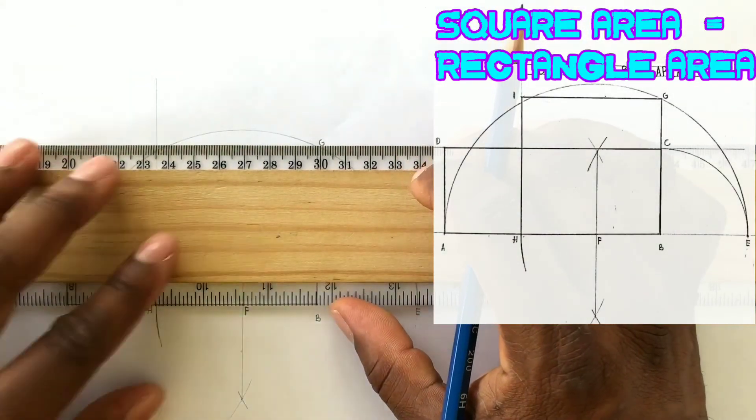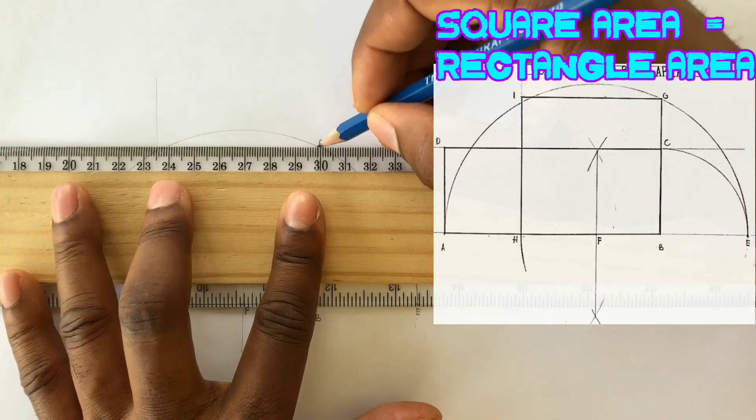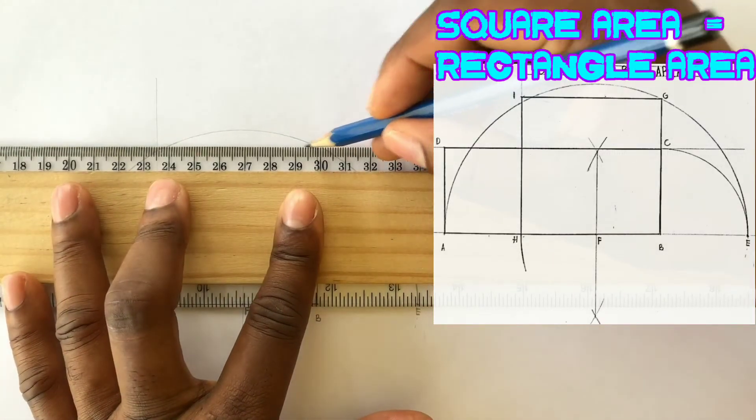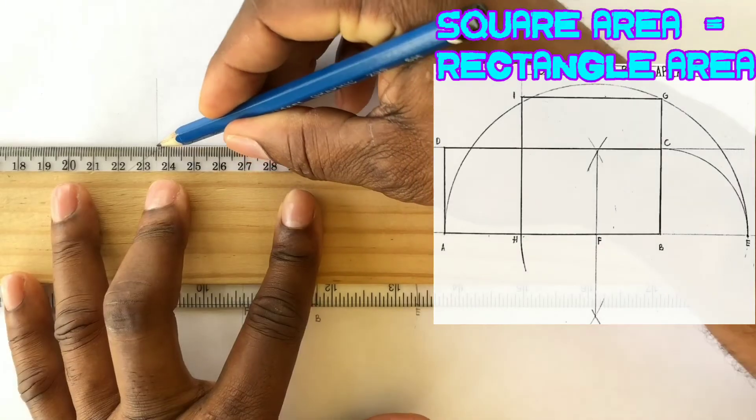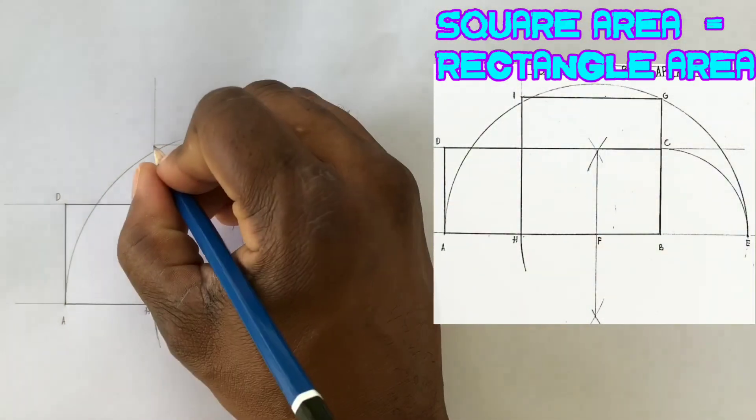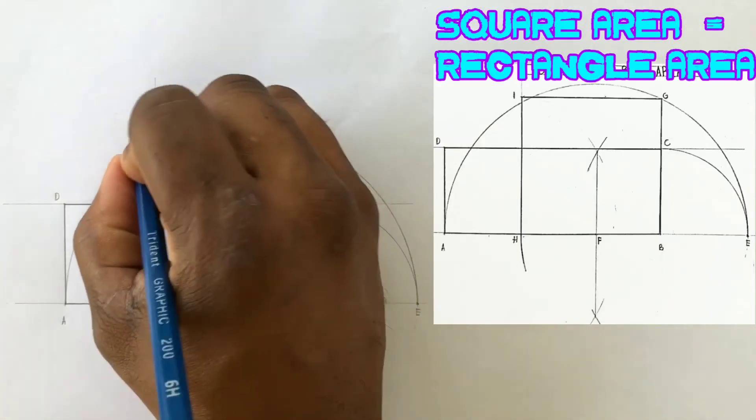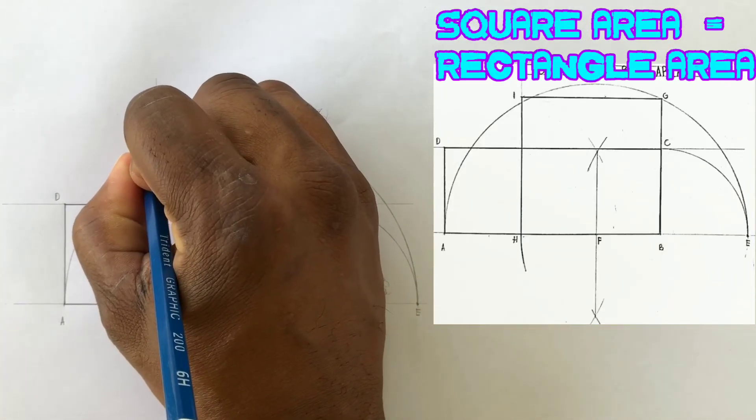Now from point G, use your T-square to draw a horizontal line to touch the vertical line you last drew. These two lines will intersect giving you point I. Label point I.